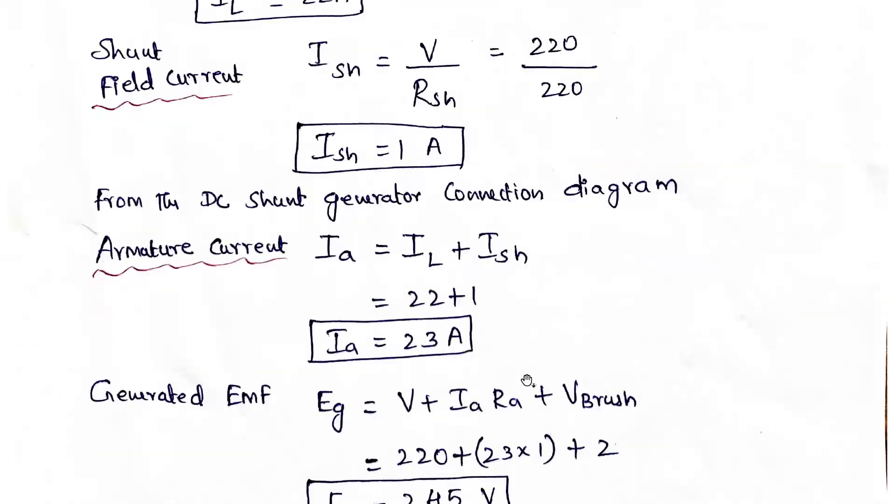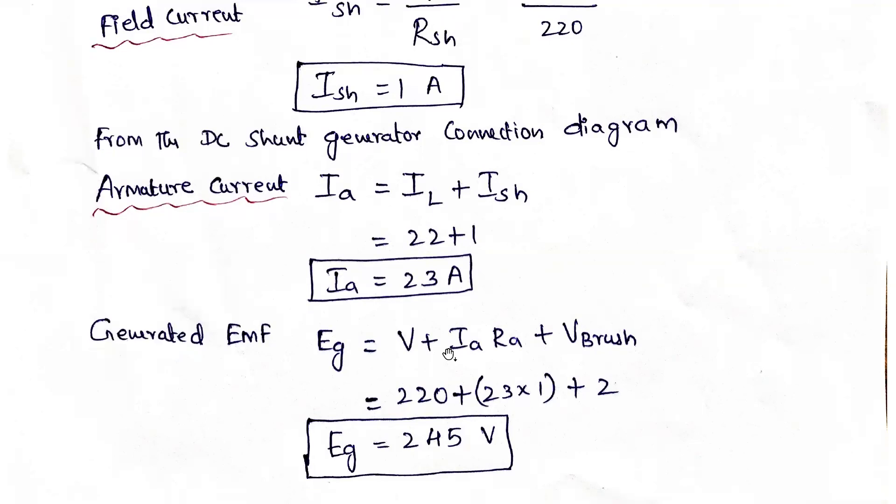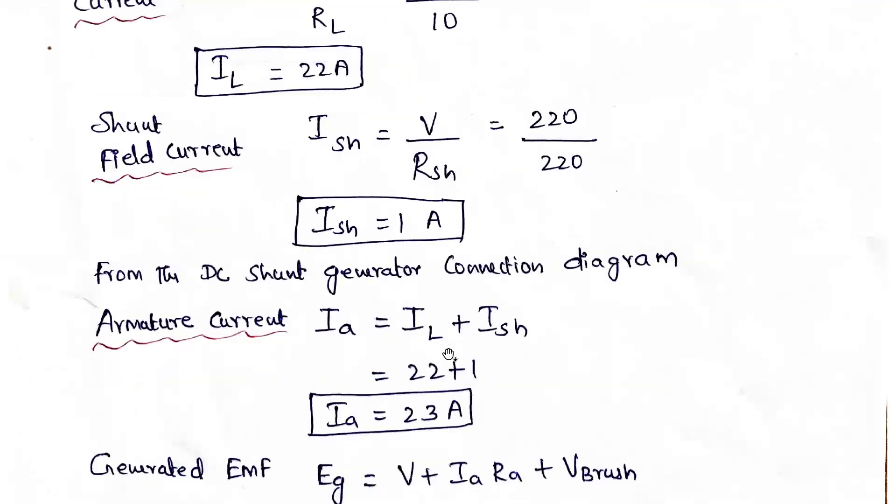Plus Vbrush - voltage drop in the brushes is 2 volts, so that also we are adding. Now if you simplify it, we get the generated EMF as 245. So this is the answer for this problem.